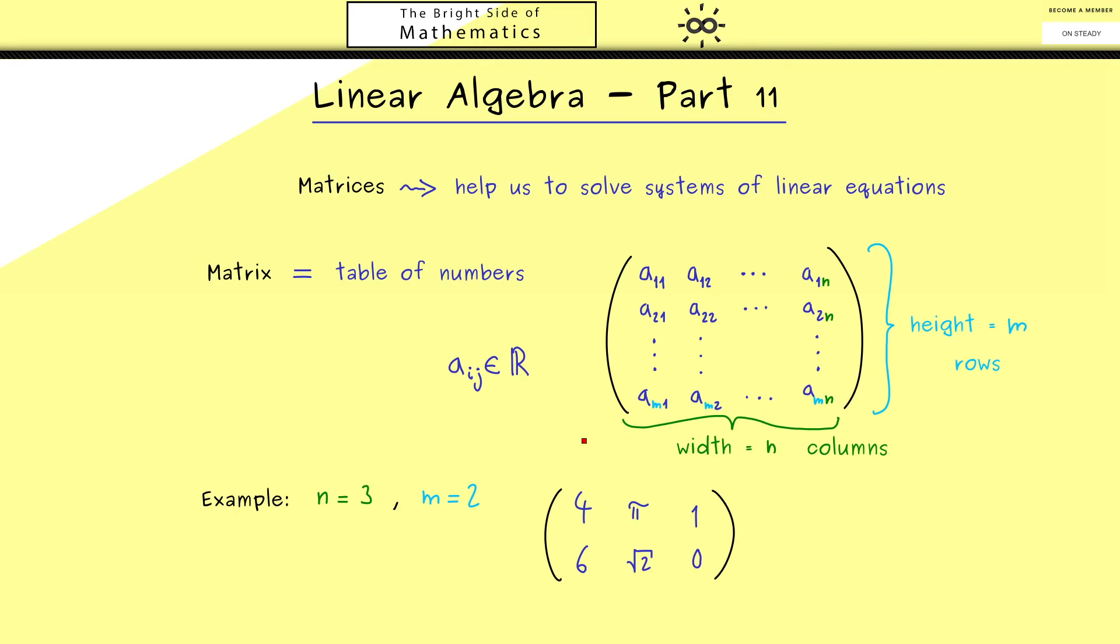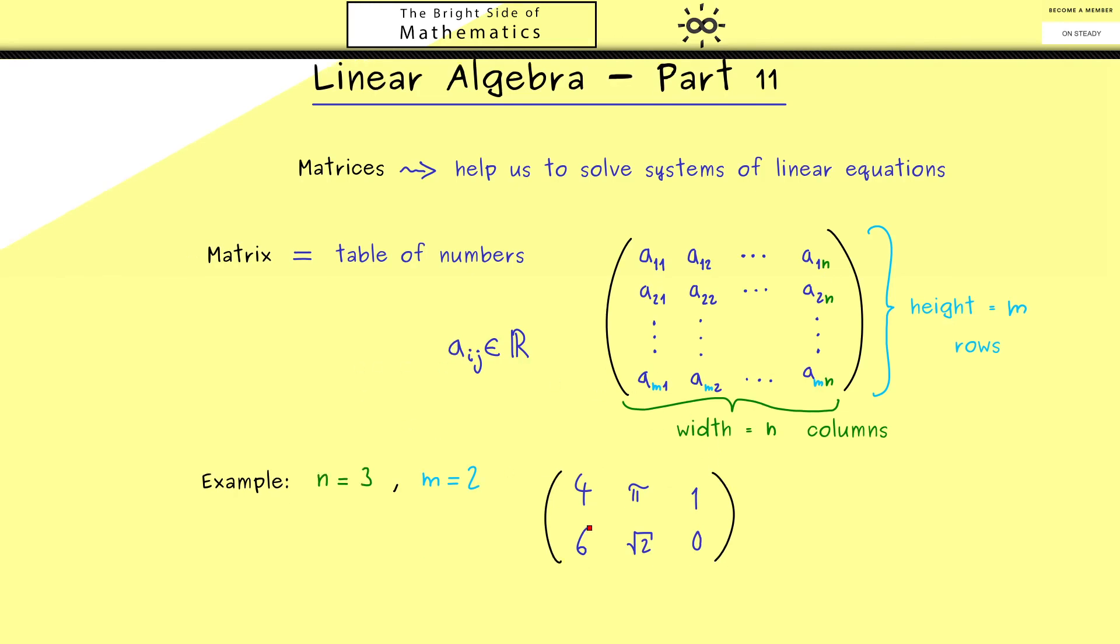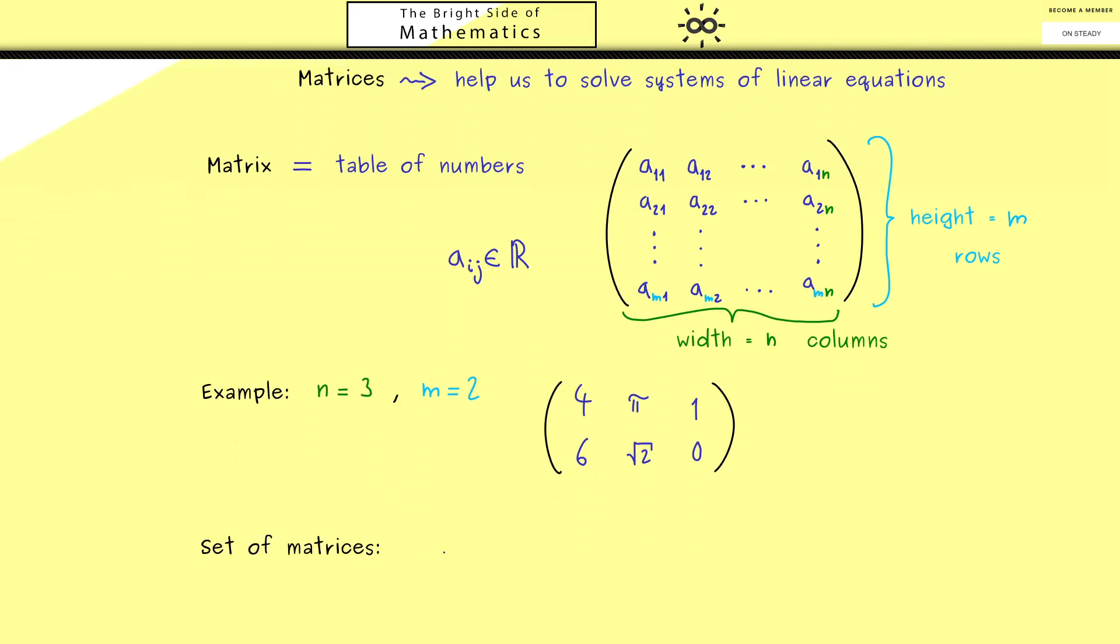Okay so you see this is one easy example but now we want to look at the set of all possible matrices. Of course this is also not so complicated but there are different notations one uses for this set.